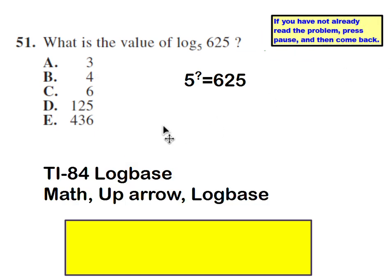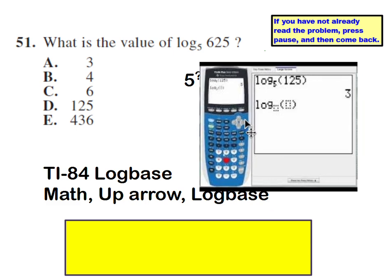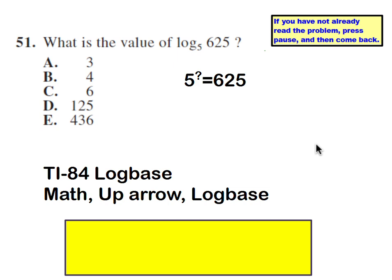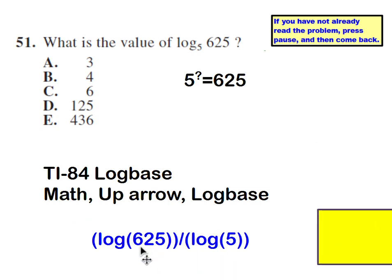If you have a TI-84 calculator, you can use their log base feature. You would just press the math button and then the up arrow to log base and then you'll end up with something that looks like this. You can just input the 5 here and the 625 here. Now if you don't have a TI-84, but your calculator does have a log button, you can just do the log of 625 divided by the log of 5. And notice I have the entire top in parentheses and the entire bottom in parentheses. Otherwise it will not work.